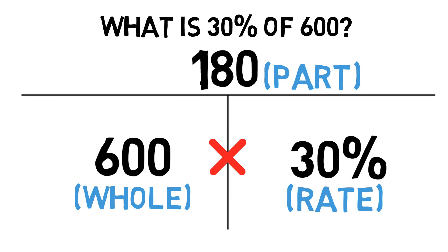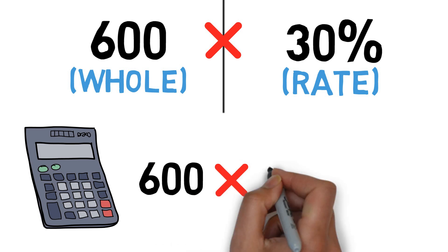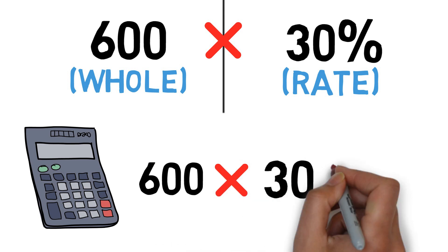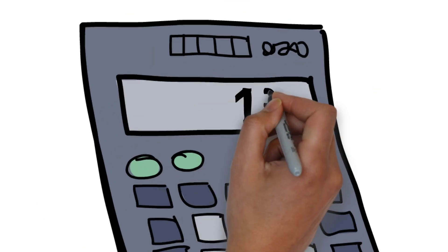Again, use your percent key. If you take 600, then hit times, then hit the number 30, then hit your percent key, most calculators will flash up a number that says 180.